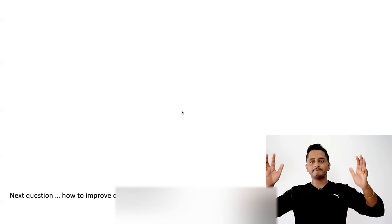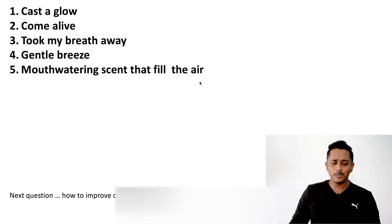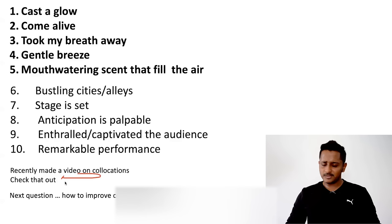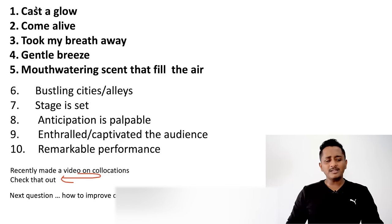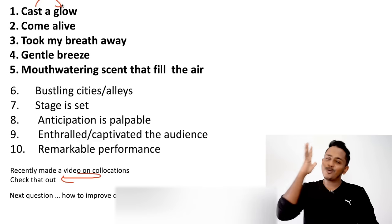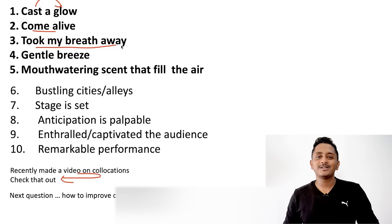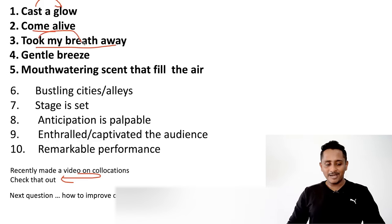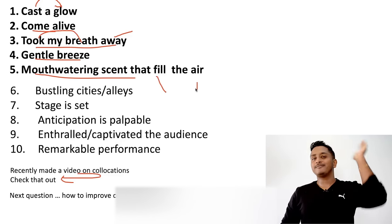Now we move to collocations. The list is vast but I'll cover ten examples. Recently I made a video on collocations — 70 collocations are shared there, link in the description. Examples: 'cast a glow' — the sun is casting a glow on my skin. 'Come alive' means get up and start. 'Took my breath away' — her beauty took my breath away, meaning I was just baffled.